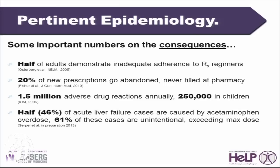Now, some important numbers on the consequences. Half of adults demonstrate inadequate adherence to Rx regimens — pretty consistent in the cardiovascular and diabetes literature. The only time I've seen respectable numbers in the 70–80% range is in HIV, where adherence research has been a main focus for two to three decades. Twenty percent of new prescriptions go abandoned and never filled at the pharmacy. One and a half million adverse drug reactions annually, with a quarter million in children. Half of acute liver failure cases in the United States are caused by acetaminophen overdose, and 61% of these cases are unintentional, with exceeding the maximum dose identified as the root cause.